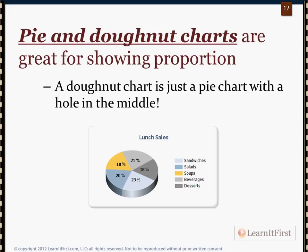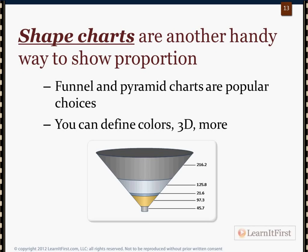You have pie and donut charts, which are good for showing proportion — when you have 100% and want to show what the breakdown is. A donut chart is really just a pie chart with a hole in the middle. Shape charts are another way to do this — funnel charts, pyramid charts are your choices. You can change colors, gradient, shade, drop shadow, and make them 3D to look fancy.